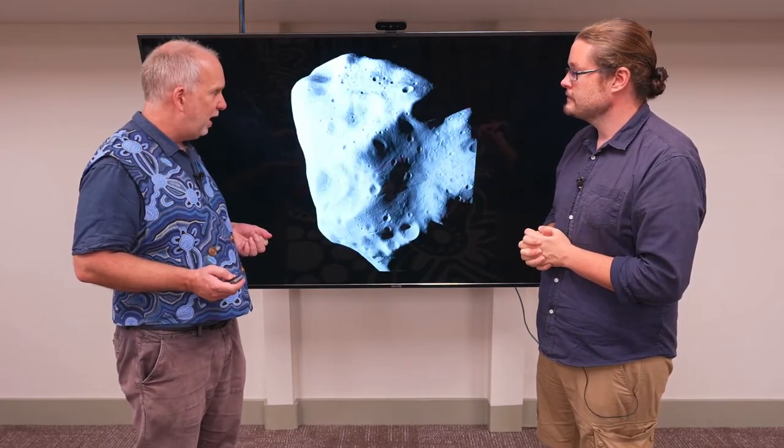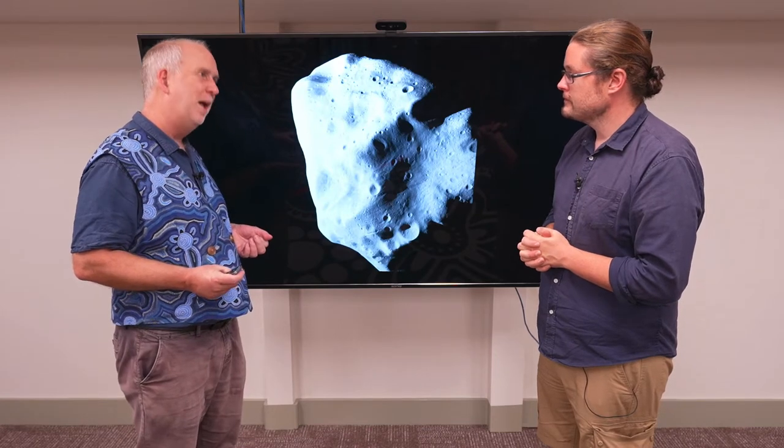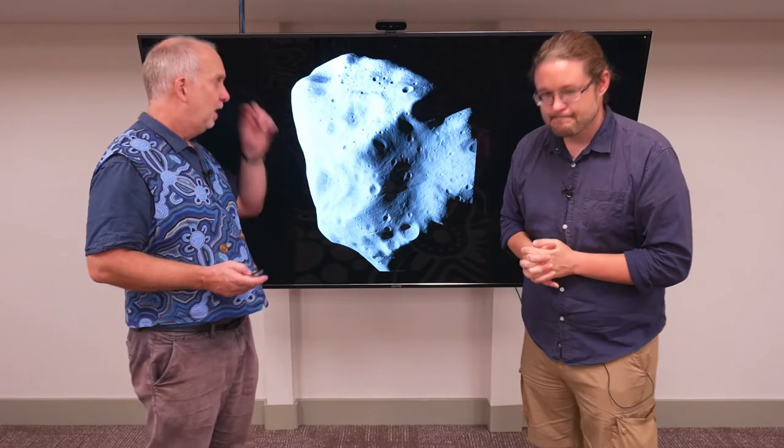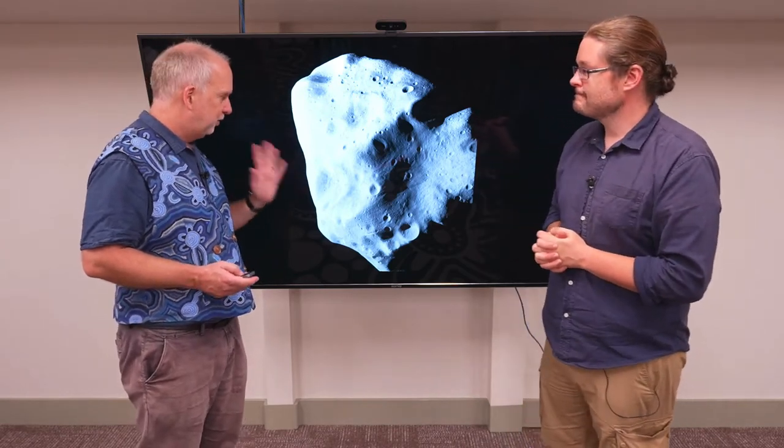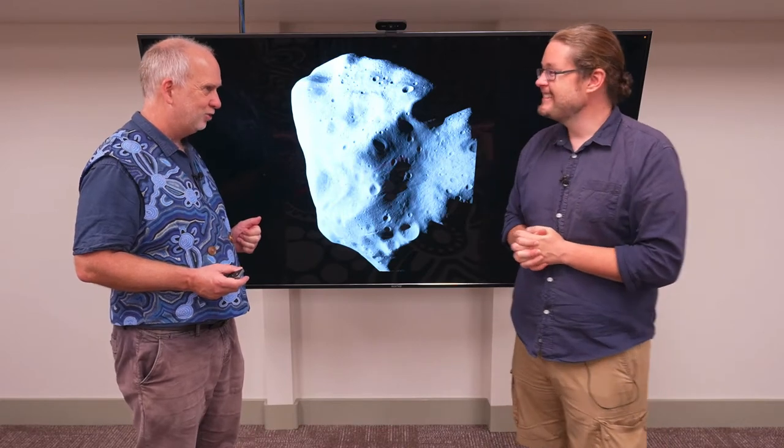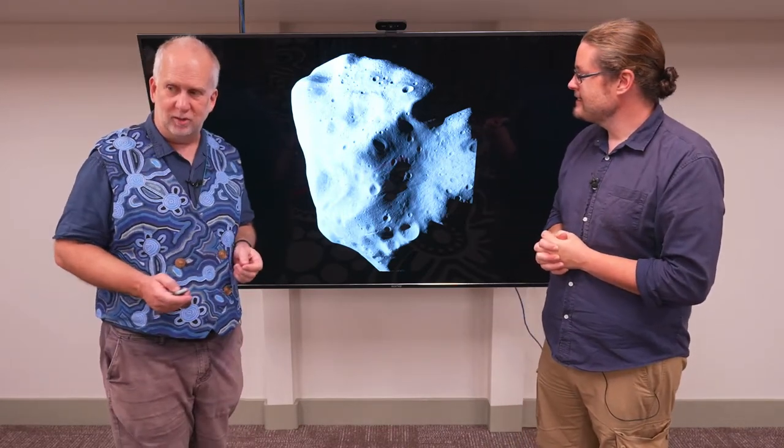Then finally, and rather rarer, are what's called X-type or M-type. X for unknown, but they're actually pretty metal. These ones make asteroid miners' eyes light up. These are solid chunks of nickel and iron, and other useful rare metals. Here's an example of one of these things.